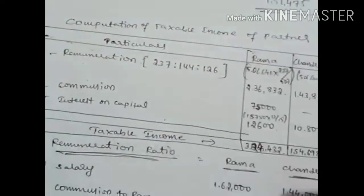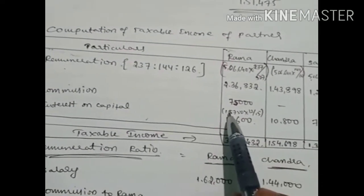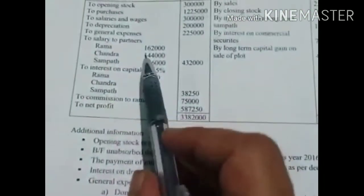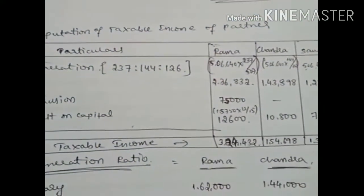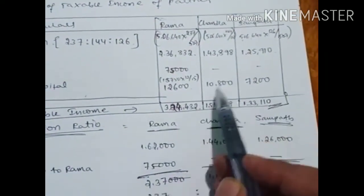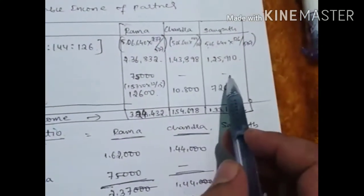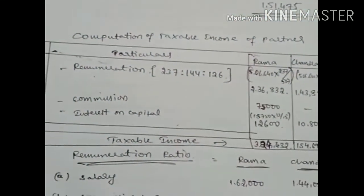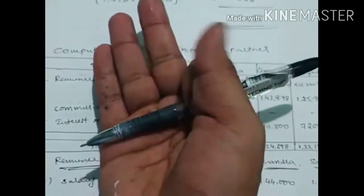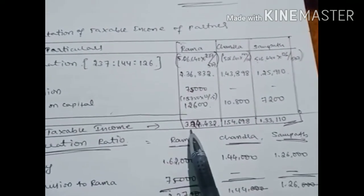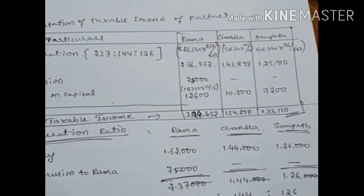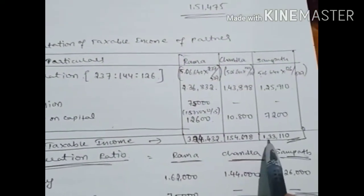Interest on capital: up to 12 percent is taxable in the hands of the partner, excess of 12 percent in the hands of the firm. Rama's share: 1 lakh 15 thousand 750 into 12/15. Chandra's share: 13 thousand 500 into 12/15. Sampat's share: 9 thousand into 12/15. Partners receive remuneration, commission, and interest on capital. Adding all amounts: Rama's taxable income is 3 lakh 24 thousand 432; Chandra's is 1 lakh 54 thousand 698; Sampat's is 1 lakh 33 thousand 110.